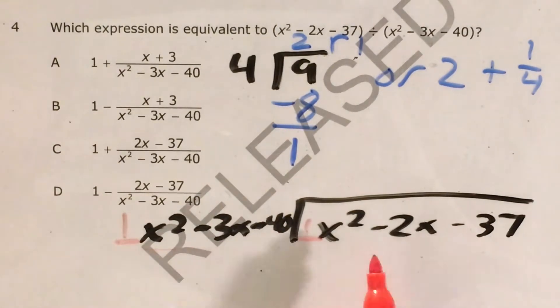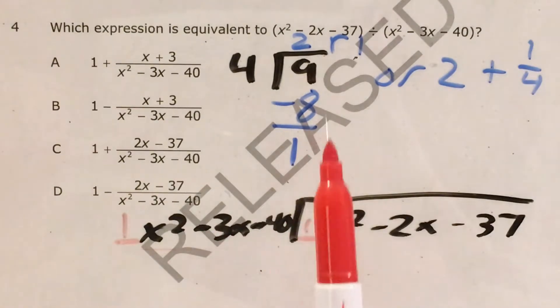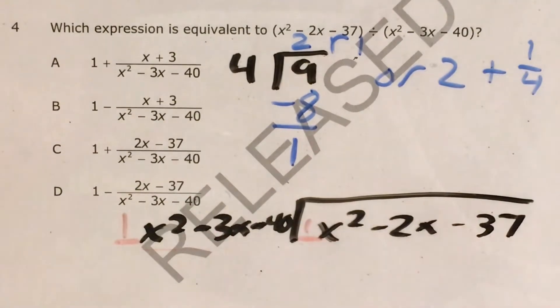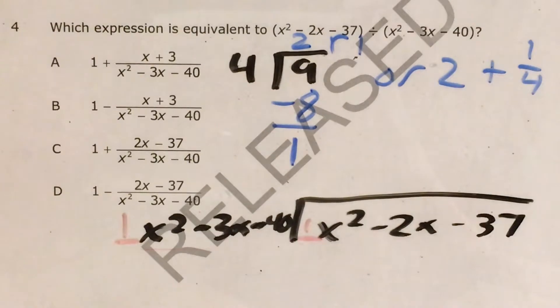That's probably the trickiest part of this whole thing, figuring out how many times our divisor can go into our dividend. How many times one x squared minus three x minus 40 can go into one x squared minus two x minus 37. In polynomial language, we just say that it's the number of times this lead coefficient can go into this one, and that's just one. So one.